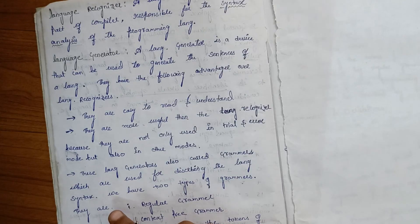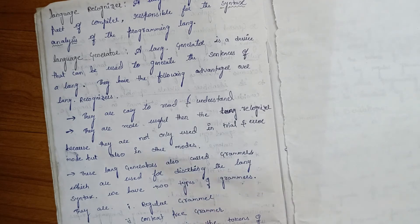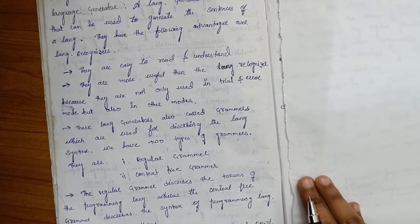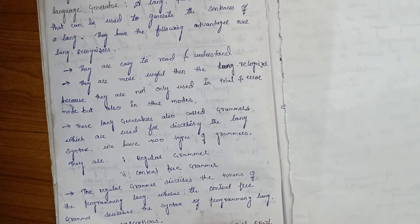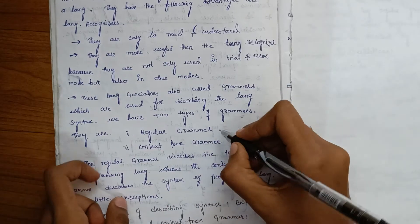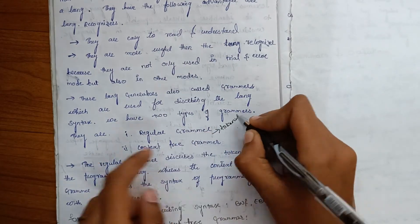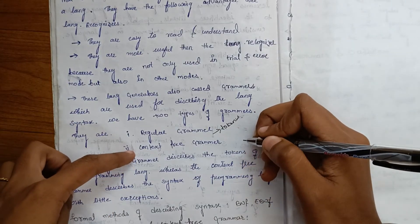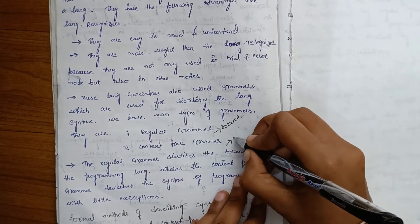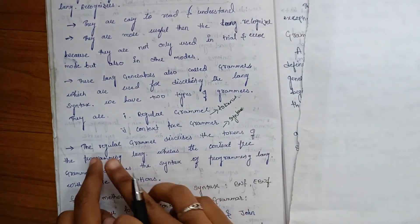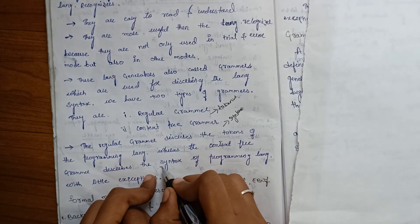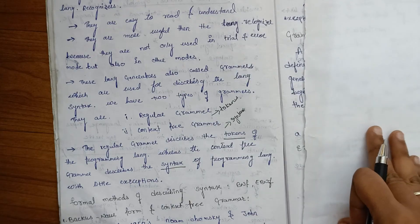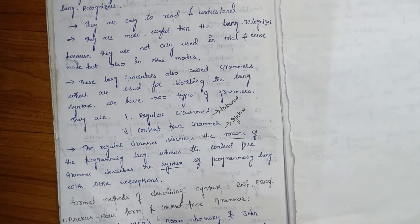We have two types of grammars: regular grammar and context-free grammar. Regular grammar describes the tokens of the programming language, whereas context-free grammar describes the syntax of the programming language, with little exceptions. Regular grammar describes tokens and context-free grammar describes syntax.